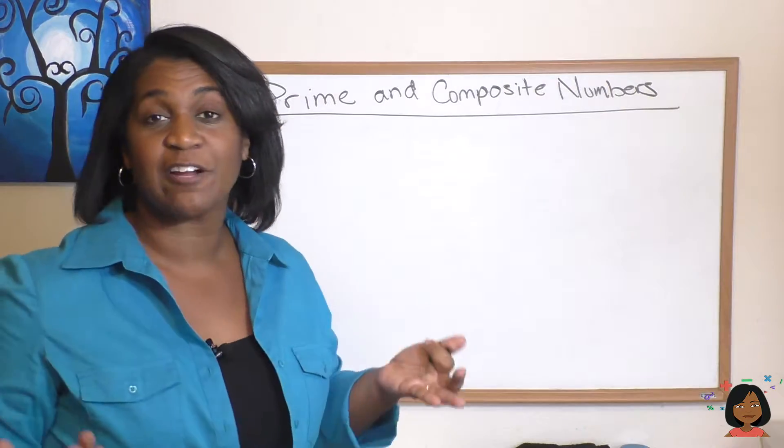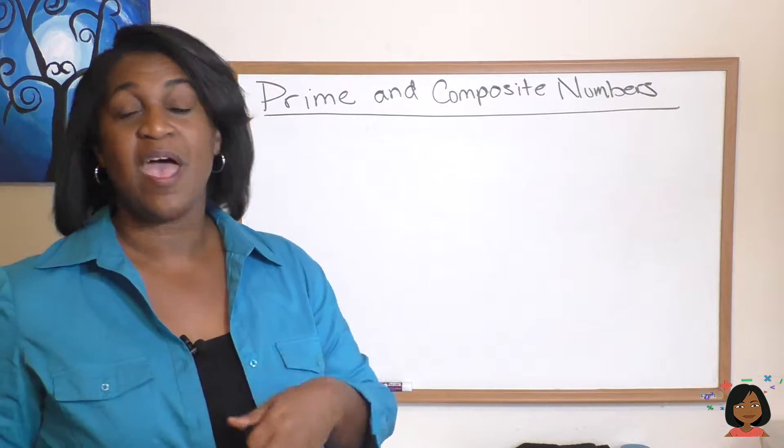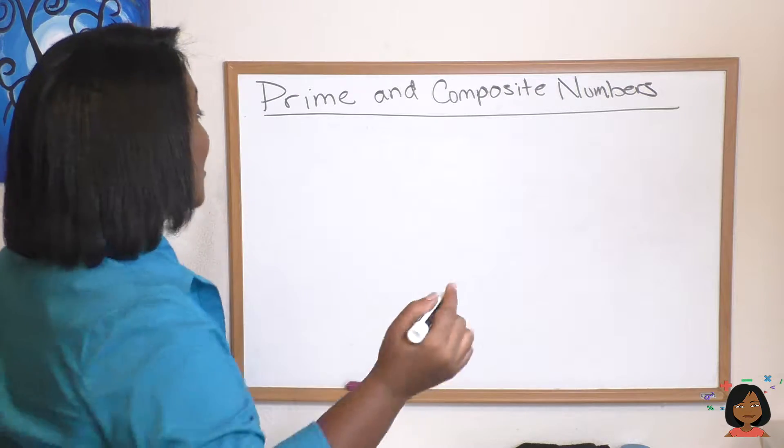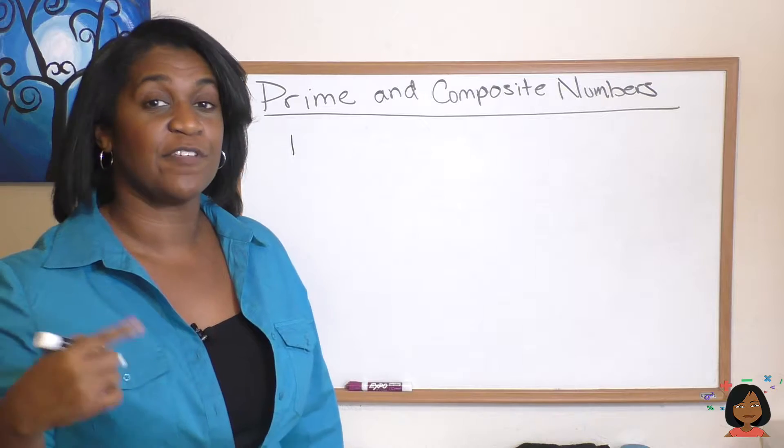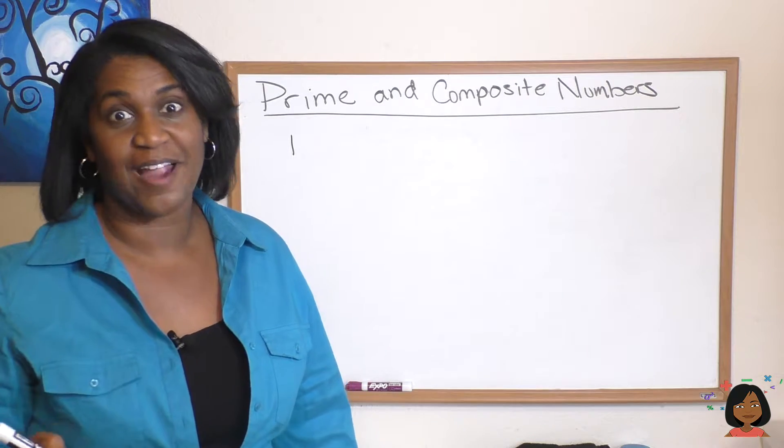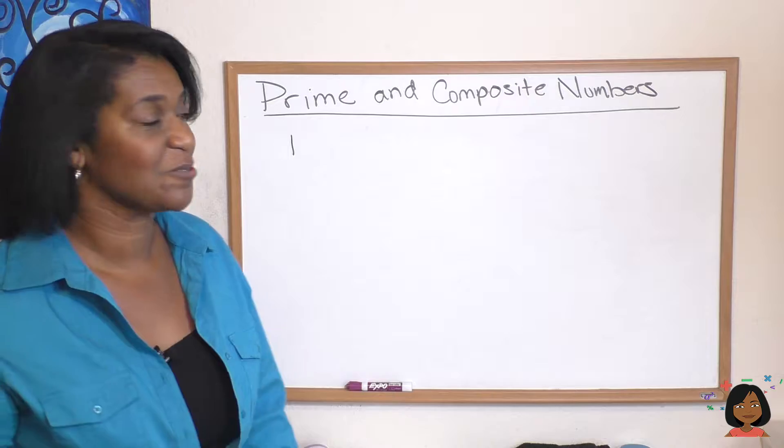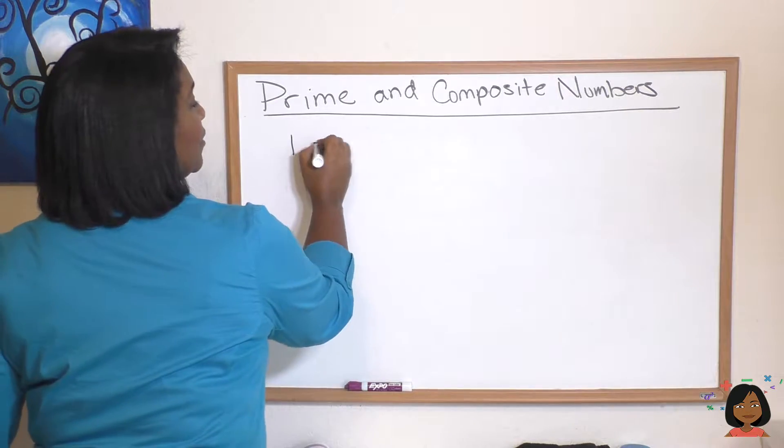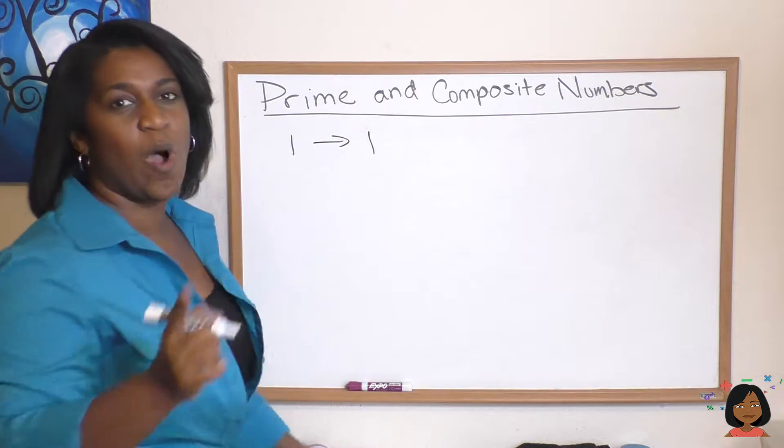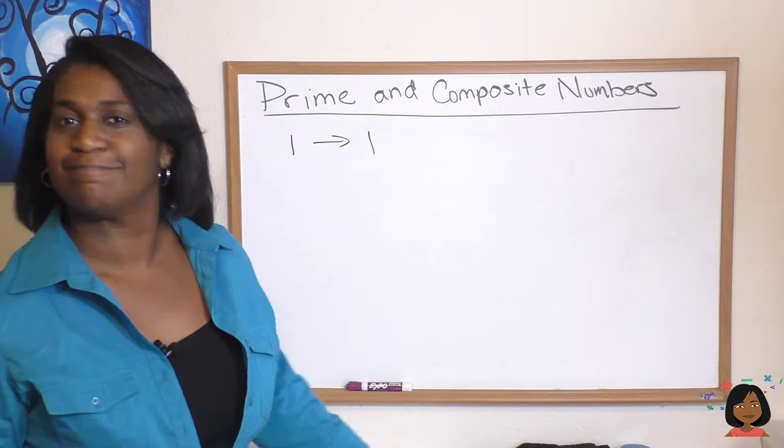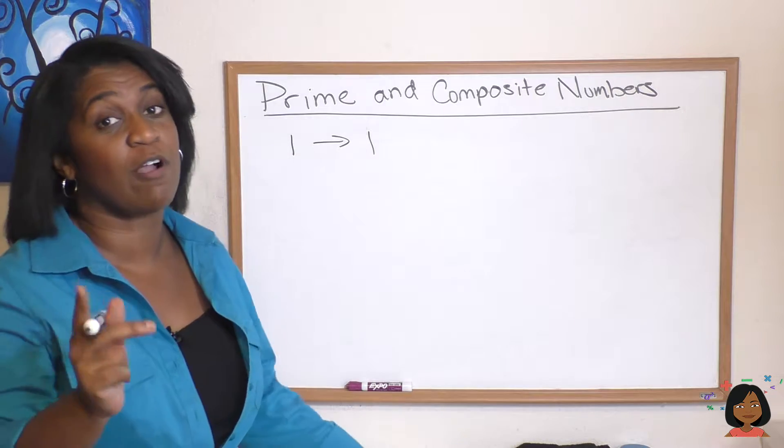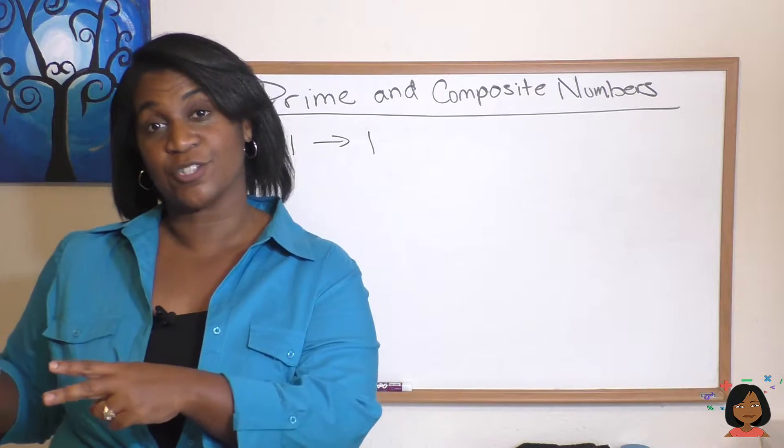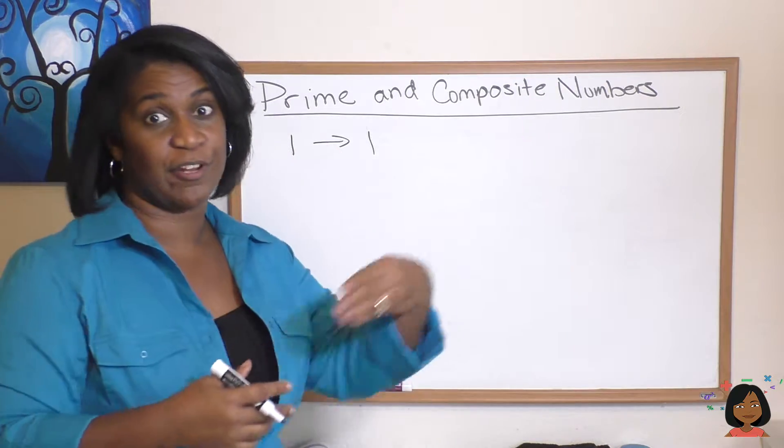Let's start with the number one. How many factors does the number one have? It only has one factor, one, right? One times one is one, so there we go, we'll put a one there. Is one prime or composite? It's neither, good catch, because I said prime has two factors and composite has three or more, so one is neither prime nor composite.